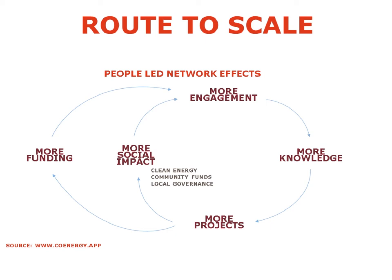Community energy actually has a really natural positive feedback loop — it's naturally designed for scale. What you can see in this diagram is a network effect: the more people that participate, the more people it attracts. The more projects are delivered, the more social impact — which is what people really care about — and the more funding it attracts. Therefore, there's more engagement from more people in society, which leads to more people having more knowledge, and with more knowledge comes more projects. This creates a virtuous circle, and this is why a lot of people like community energy.